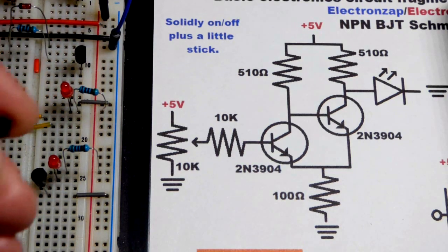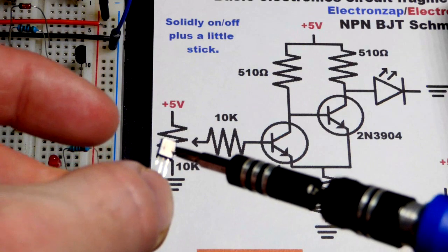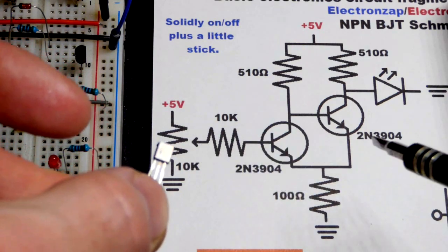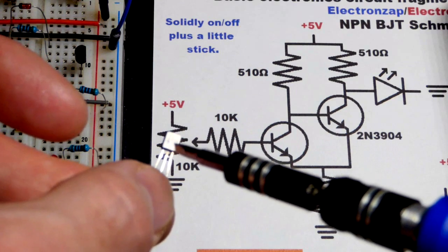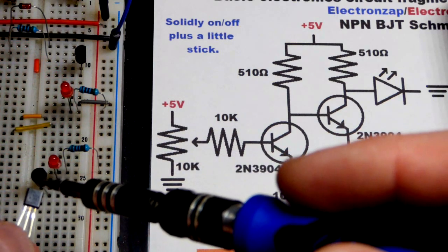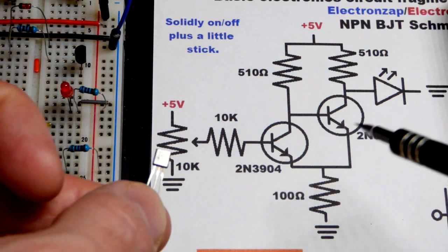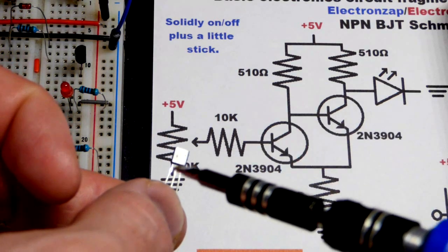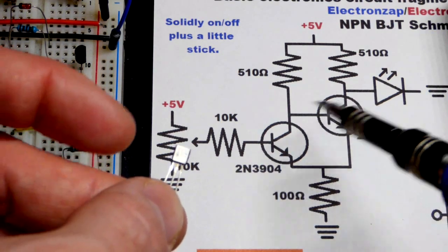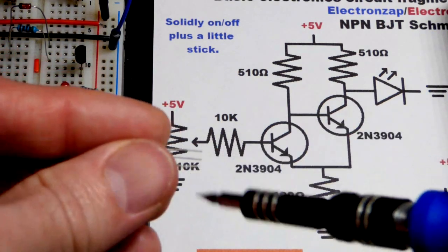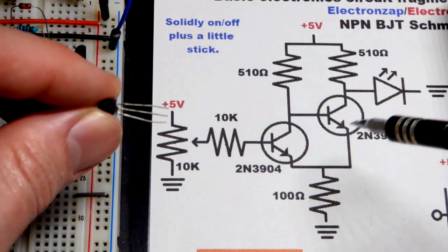Next we're going to put one of the transistors on there. This is an NPN bipolar junction transistor circuit, these are 2N3904s. We got the flat edge there, that's actually a 2N2222 but doesn't really matter. Left pin is the emitter, middle pin is the base, right pin is the collector.